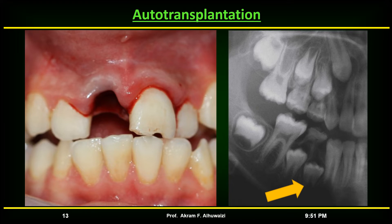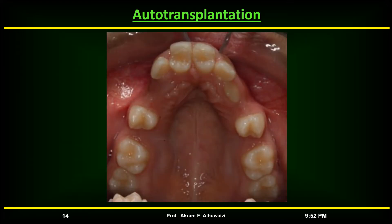Autotransplantation is the surgical repositioning of a tooth into a surgically created socket within the same patient. It is successful to transplant open-apex premolars from a crowded arch into the socket of an avulsed central incisor. These premolars are auto-transplanted in place of the upper central incisors and at a later age they are reshaped to resemble central incisors.